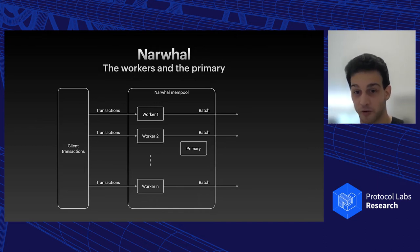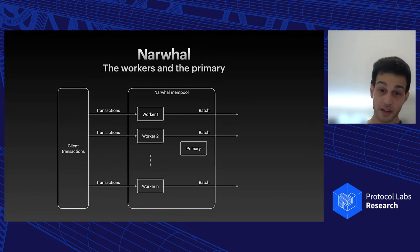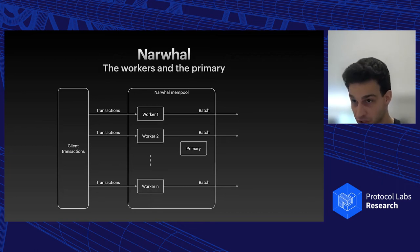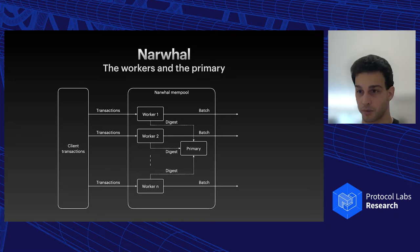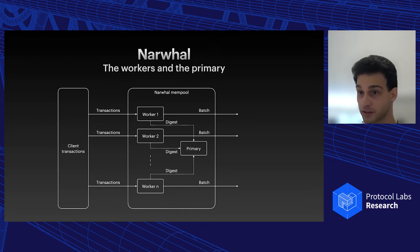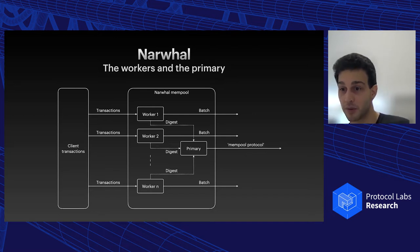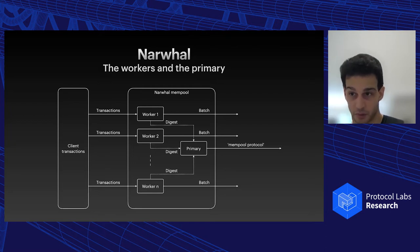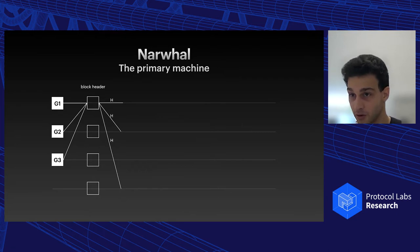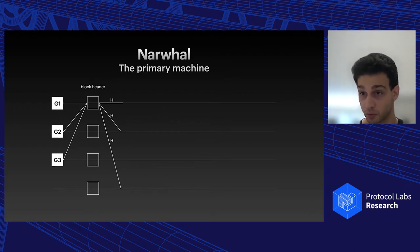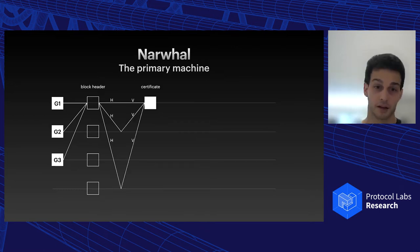This is what enables the scalability of the system. In addition to composing batches, every worker hashes the batch and sends the digest — just 32 bytes — to the primary. The primary is a process or dedicated machine that receives very small amounts of data from many workers and runs the mempool protocol, which is lightweight in the sense that it only operates on metadata.